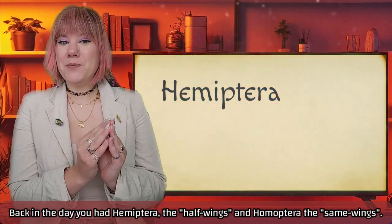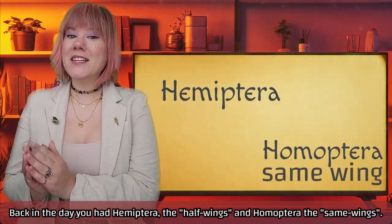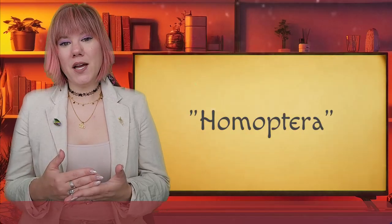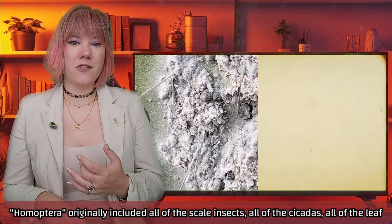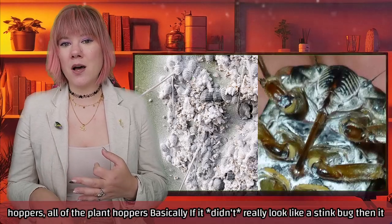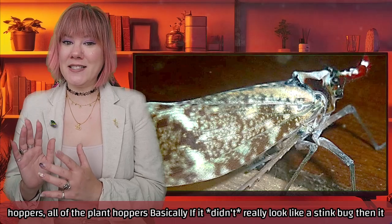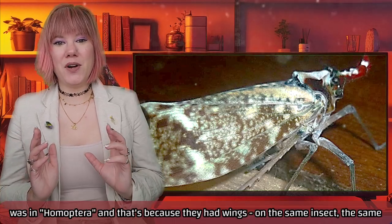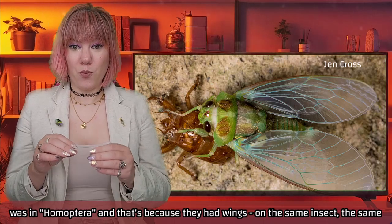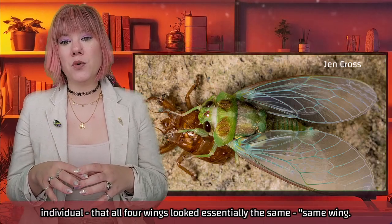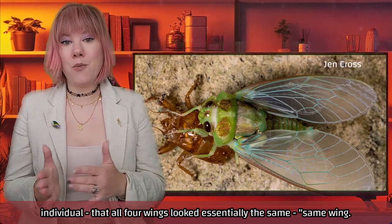Back in the day you had Hemiptera, the 'half wings,' and Homoptera, the 'same wings.' Homoptera originally included all of the scale insects, all of the cicadas, all of the leafhoppers, all of the planthoppers. Basically, if it didn't really look like a stink bug, it was in Homoptera — because on the same individual, all four wings looked essentially the same: same-winged.